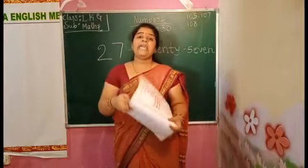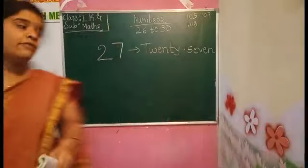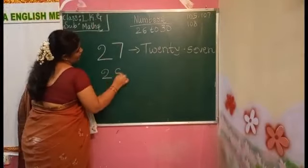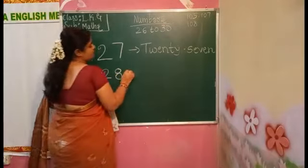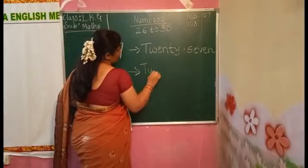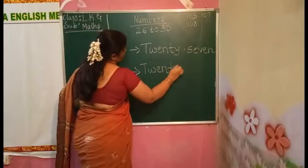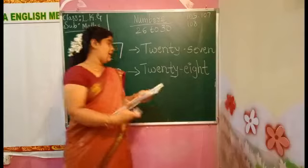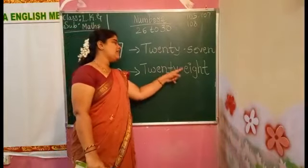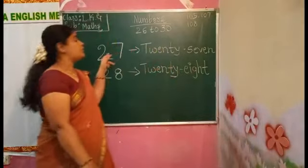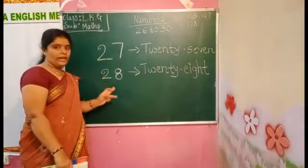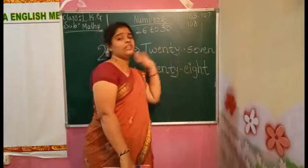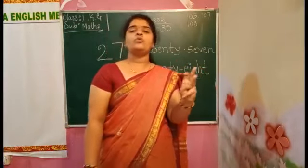Next number is 28. After 27, which number will you get? That is 28. The number name of 28 is T-W-E-N-T-Y-E-I-G-H-T. 28. T-W-E-N-T-Y-E-I-G-H-T. After 27, which number will you get? That is 28. 2-8, 28. T-W-E-N-T-Y-E-I-G-H-T. Like this you have to say.